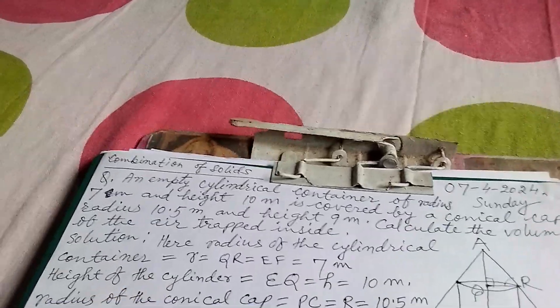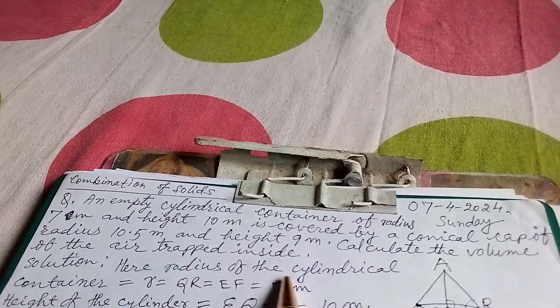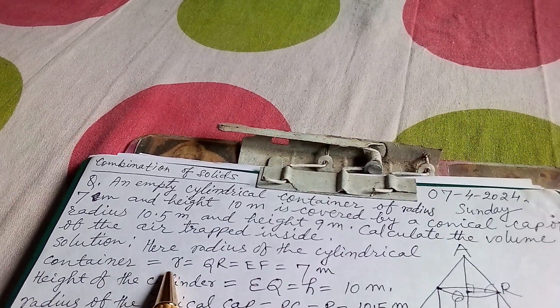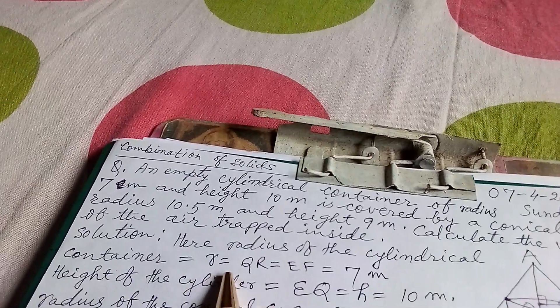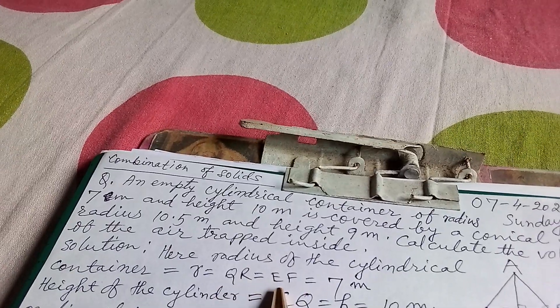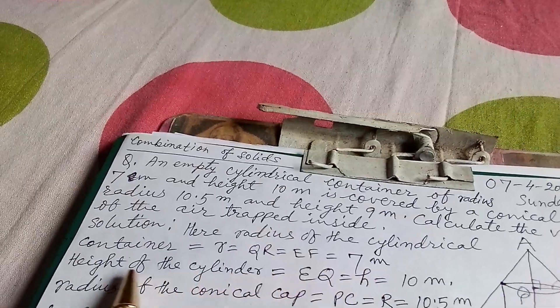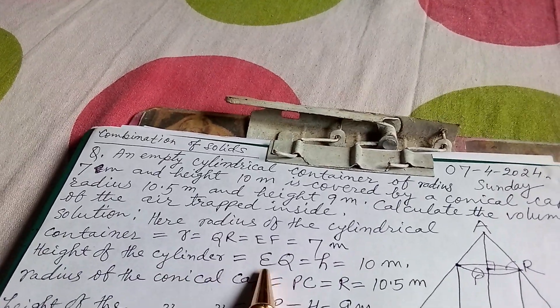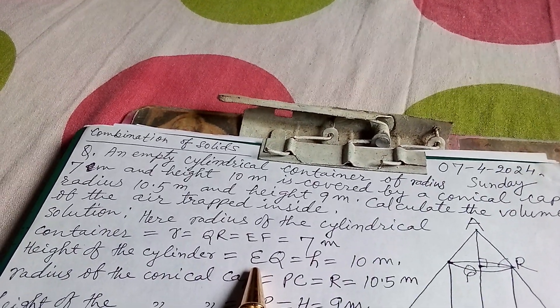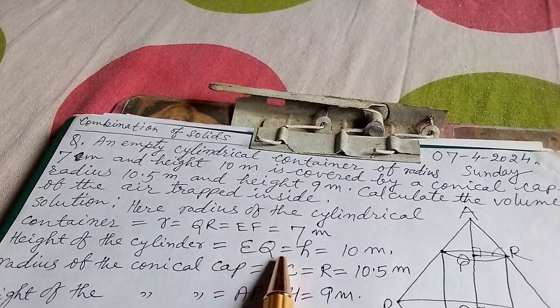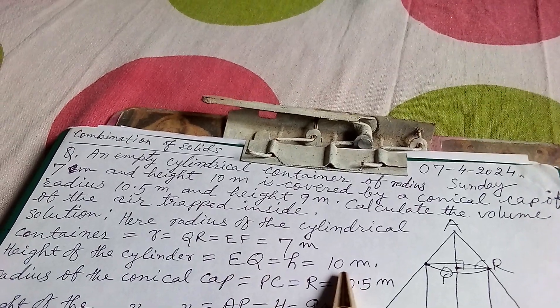The solution: radius of the cylindrical container, small r equals QR equals EF equals 7 meter. Height of the cylinder equals EQ, that is small h, that is 10 meter.